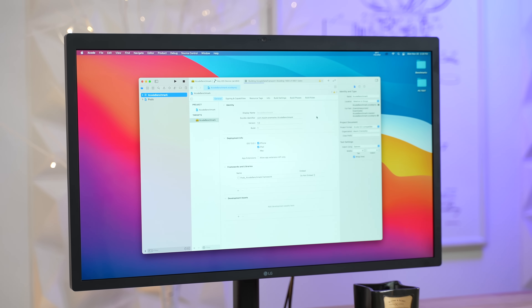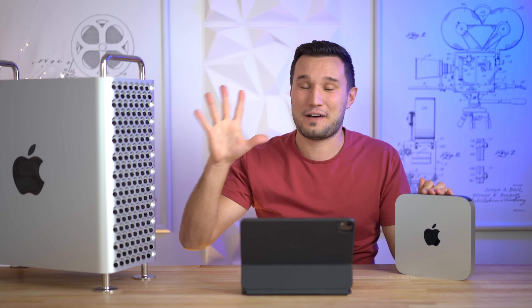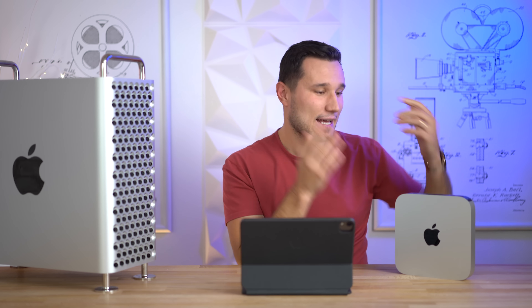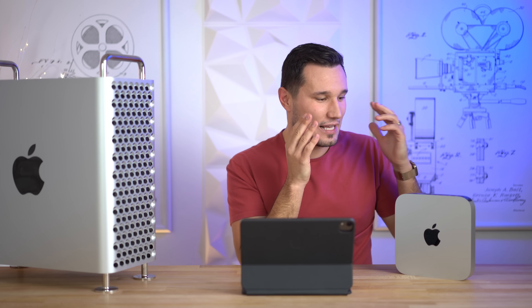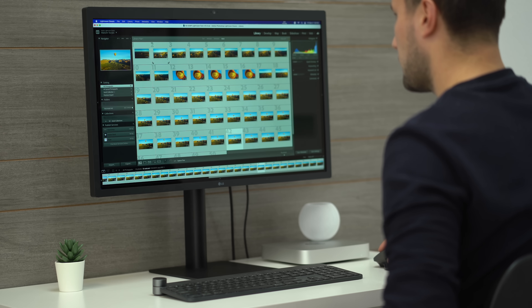For coding, we tested a custom Xcode benchmark. The Mac Pro took 125 seconds to compile the project, while the Mac Mini took 120 seconds — actually five seconds faster. Even with less RAM and nominally less performance, the M1 is just incredibly optimized for Xcode.